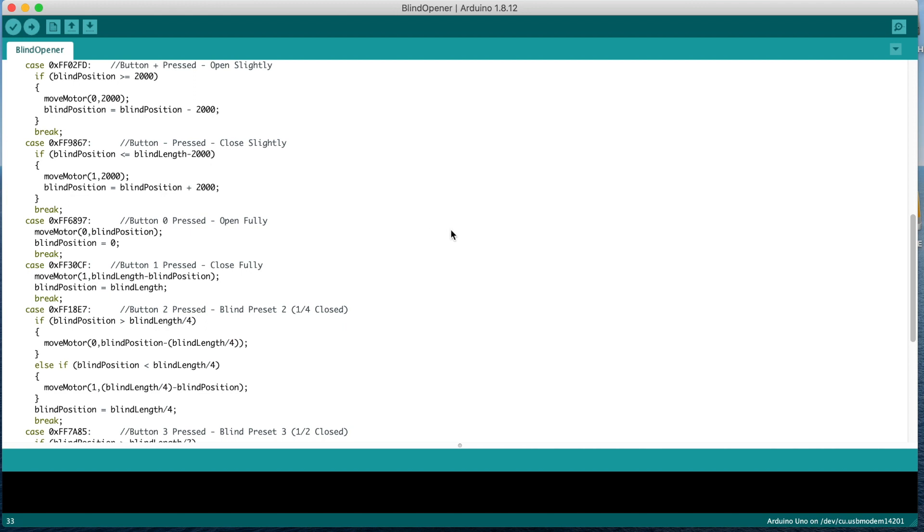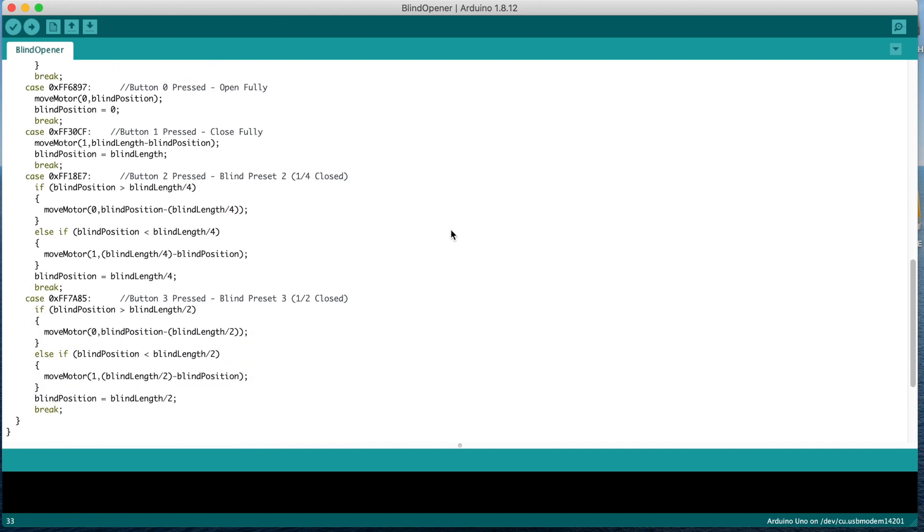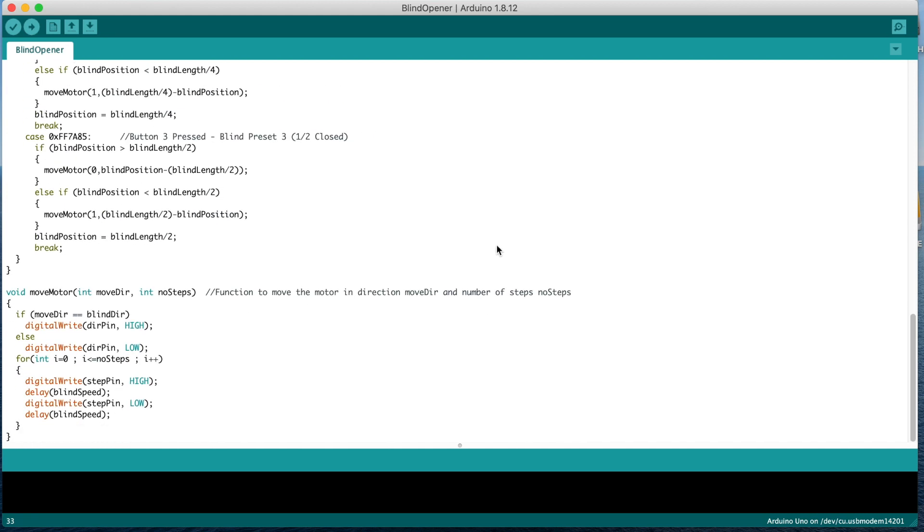Each case in the switch statement decides on the motor movement based on the blind's current position and the desired position. It then tells the motor how to move by calling the move motor function, giving it direction and the number of steps. The move motor function then sets the direction of the motor driver and generates the pulses in order to move the motor.